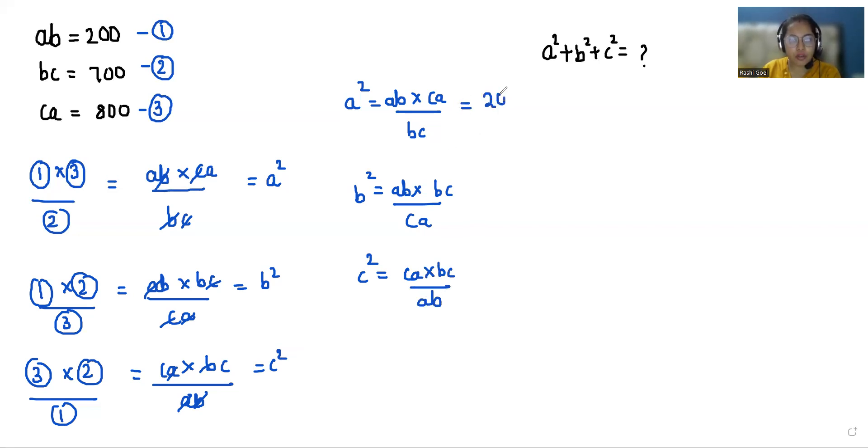If I put the value of ab, it's 200 times ca, it's 800 divided by 700, so the value of a² is 1600 by 7.